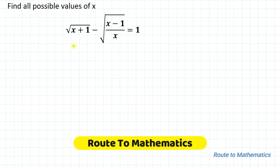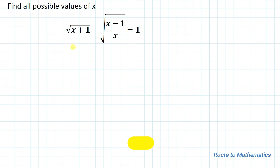Hello everyone, welcome to Root to Mathematics. In this video we are going to solve this interesting radical equation. We are given: find all the possible values of x, where root under (x+1) minus root under (x-1), divided by x, equals 1.